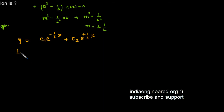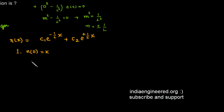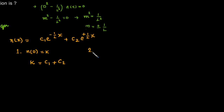Applying the first boundary condition, n(0) = k: substituting x = 0, we get k = c₁·e^0 + c₂·e^0, which gives k = c₁ + c₂. Now we apply the second boundary condition, n(∞) = 0.